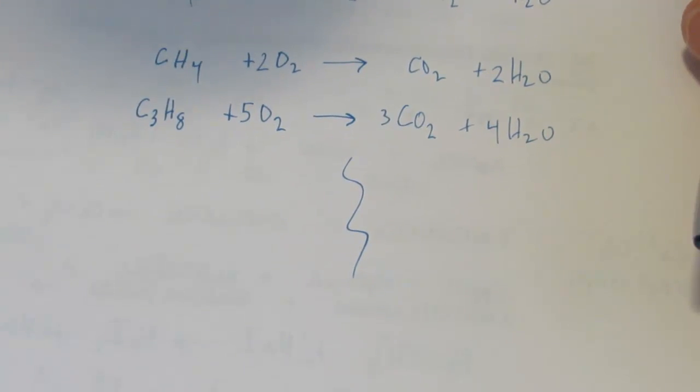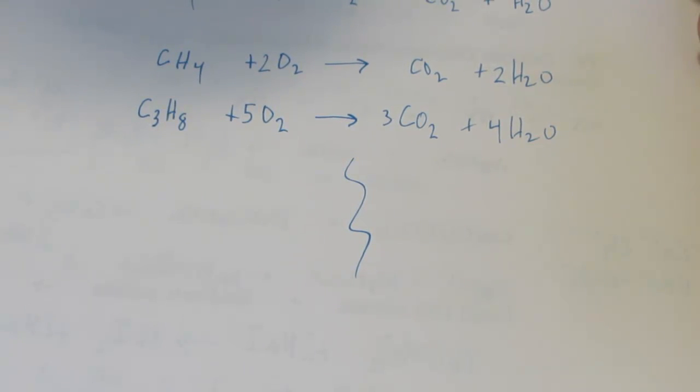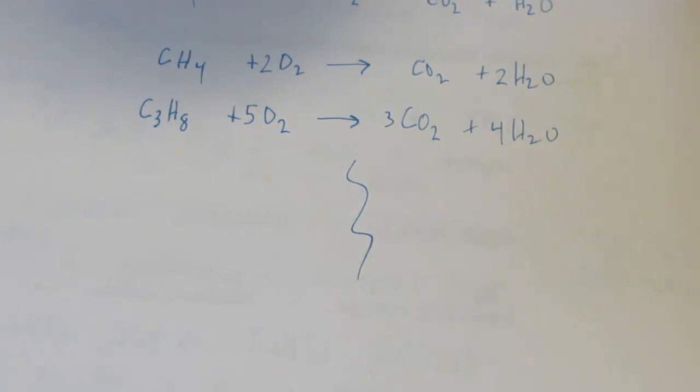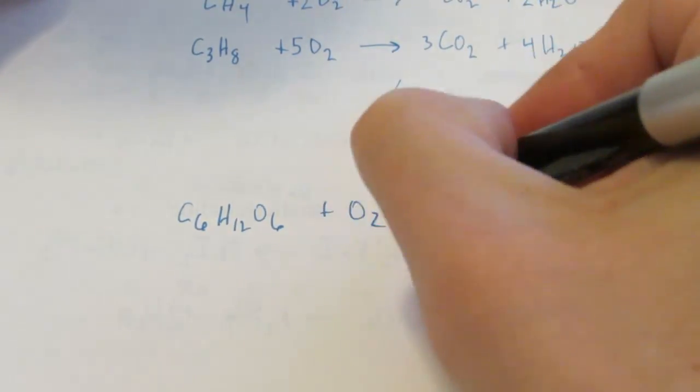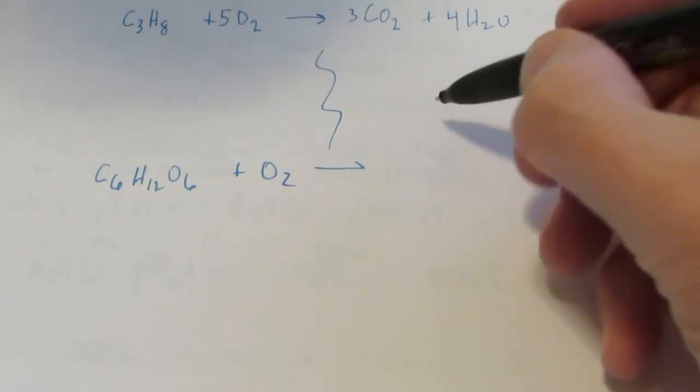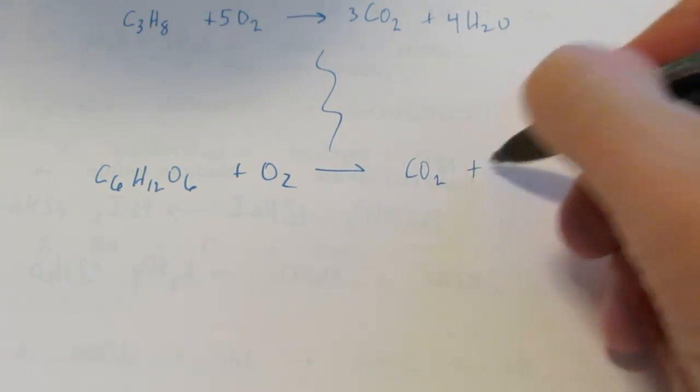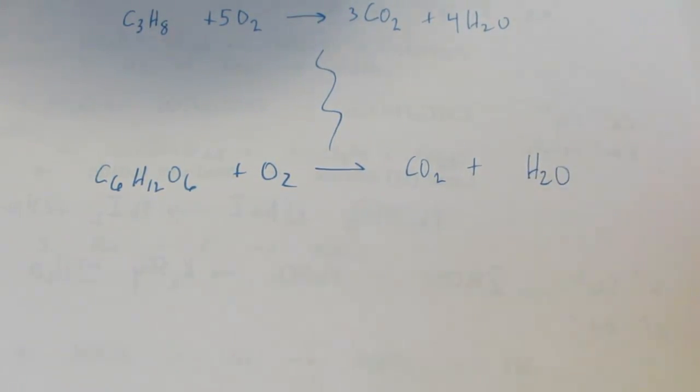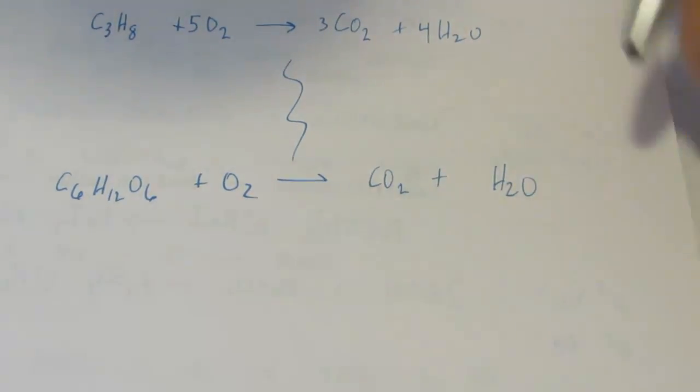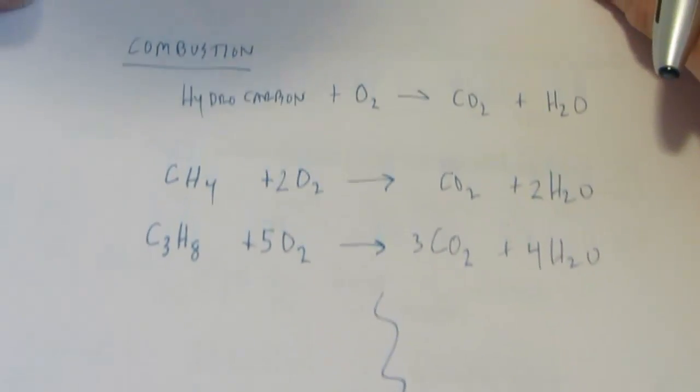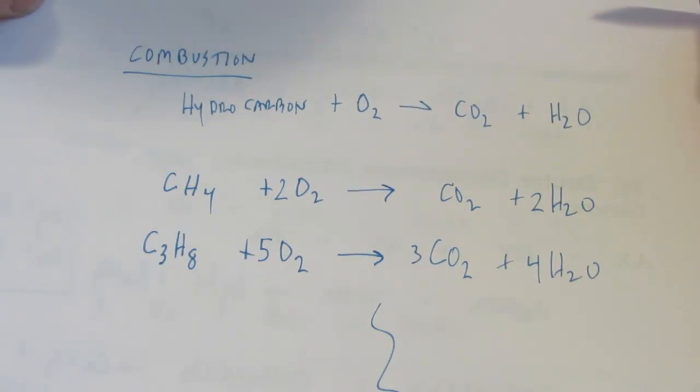The same thing happens with carbohydrates. If you were to burn C6H12O6 in oxygen, we'll call that glucose, a type of sugar, and oxygen, you would make, guess what? CO2 and water vapor. And you guys can have fun balancing that on your own. So we'll call those combustion reactions.